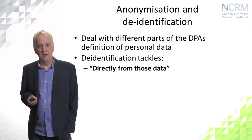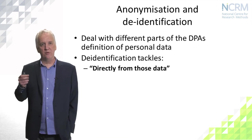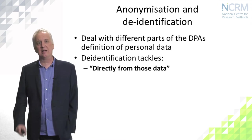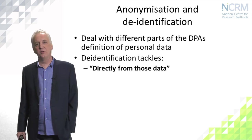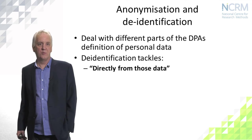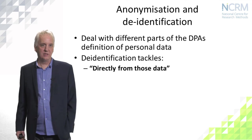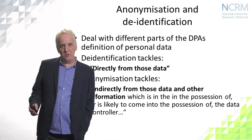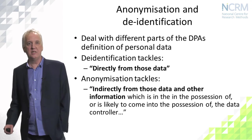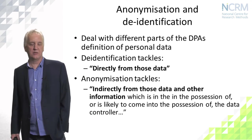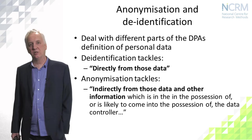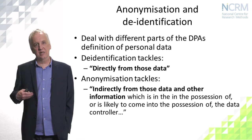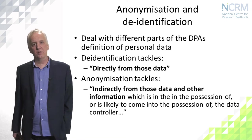i.e. it's about preventing somebody being able to recognise somebody directly from the data, so for example from their name and address. Anonymisation on the other hand tackles the other part of the definition — indirectly from those data and other information — so it's a more complex idea and anonymisation is a deeper concept.